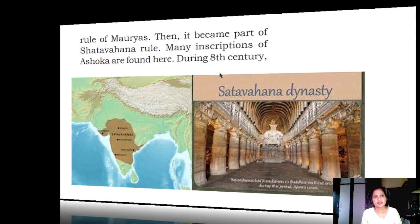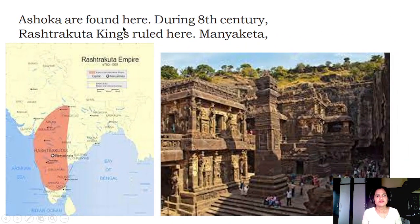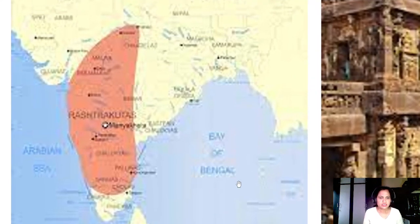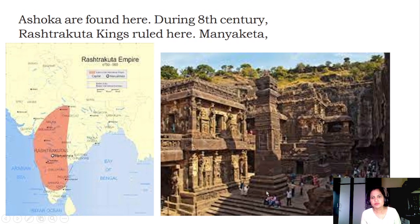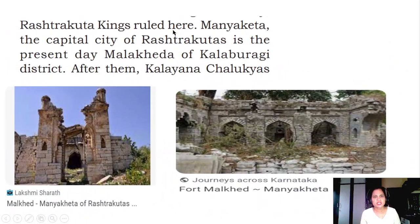During the 8th century, Rashtrakuta kings ruled here. This is the Rashtrakuta empire. Almost the whole of Karnataka was ruled by the Rashtrakutas, and not only Karnataka - a large part of India was under them. Manya Keta was where the Rashtrakuta kings ruled.